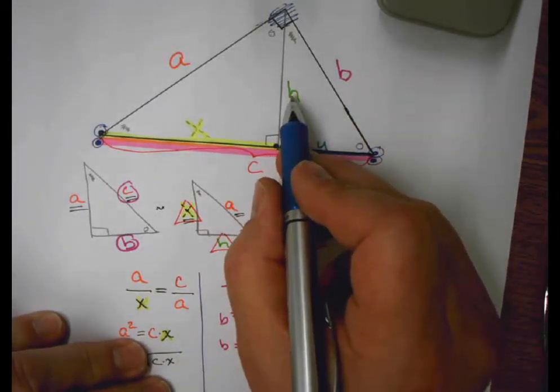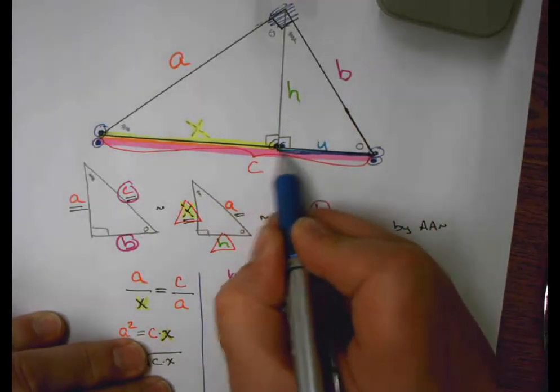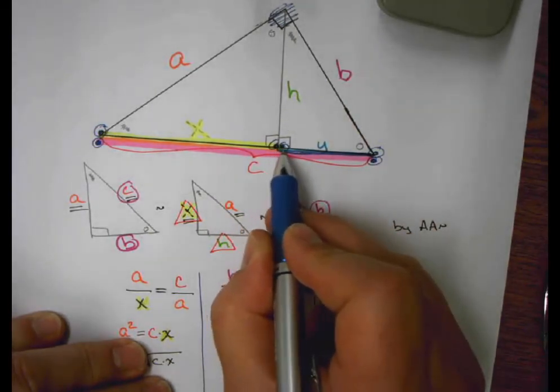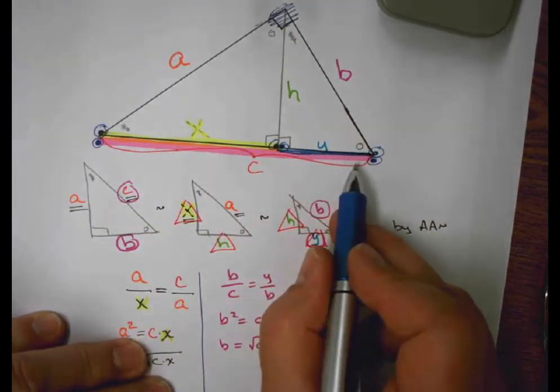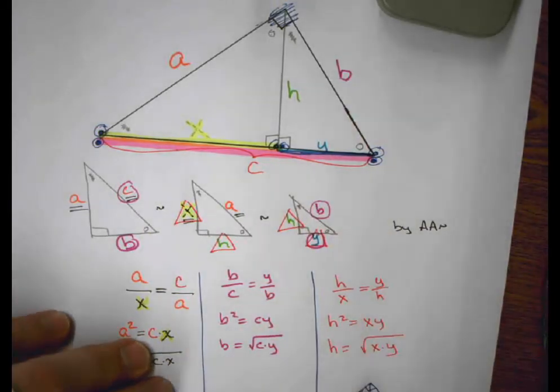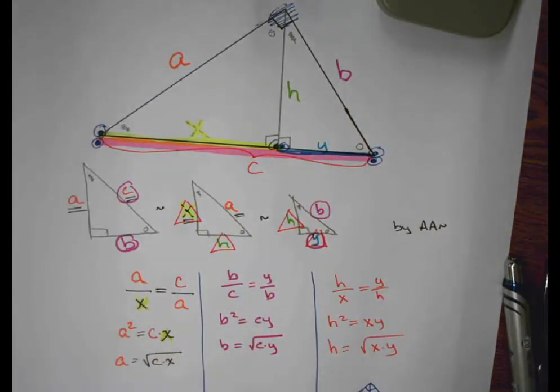And lastly, H, the height or altitude, is in fact the geometric mean between the two end points that it touches. It touches X end point and Y end point. It doesn't touch an end point of C. Hope this helps you understand the application of similar right triangles.